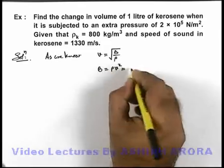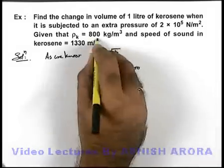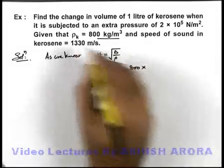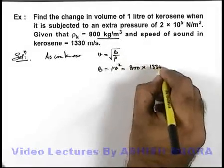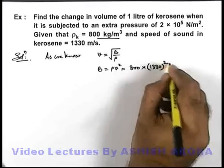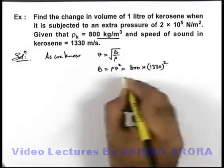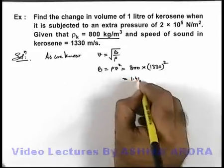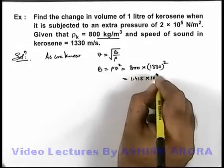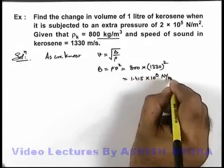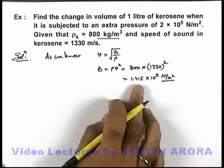If we substitute the values, density is given as 800 kg/m³ multiplied by speed is 1330 m/s. So on simplifying, we'll get 1.415×10⁹ N/m² is the bulk modulus of the medium.